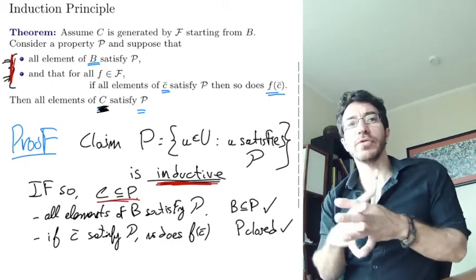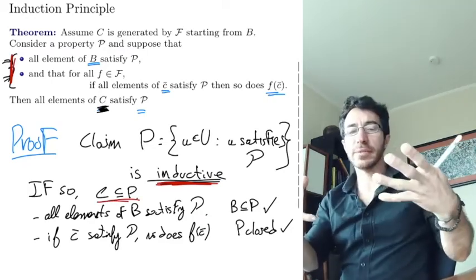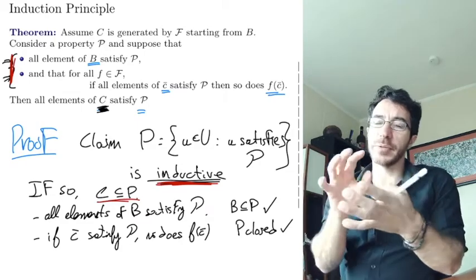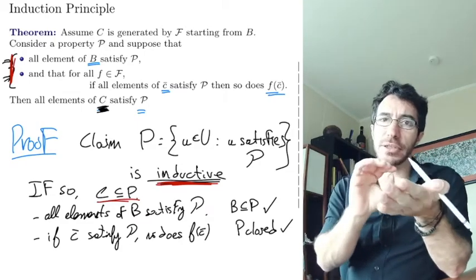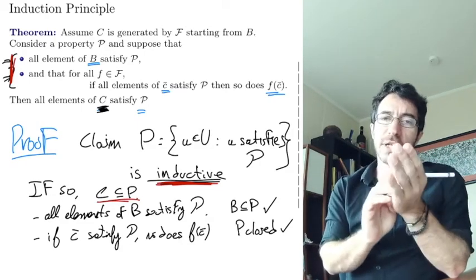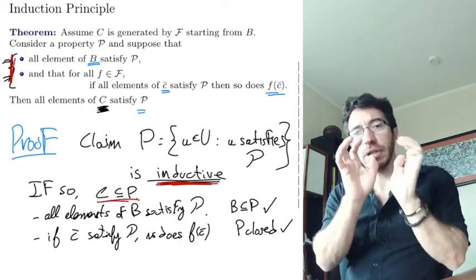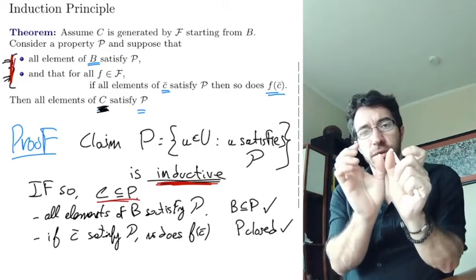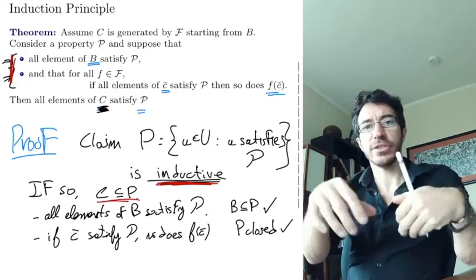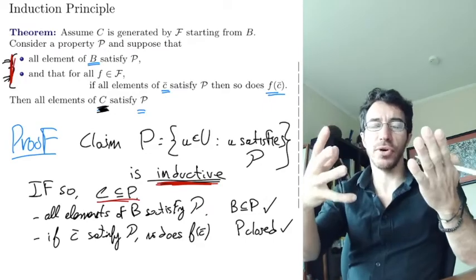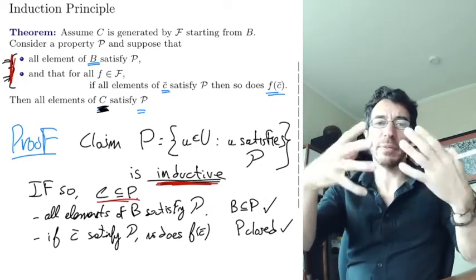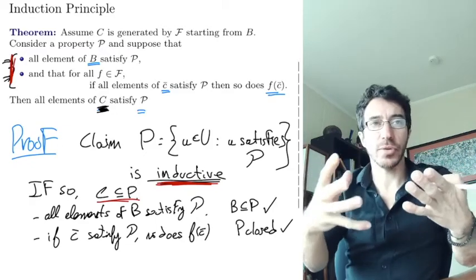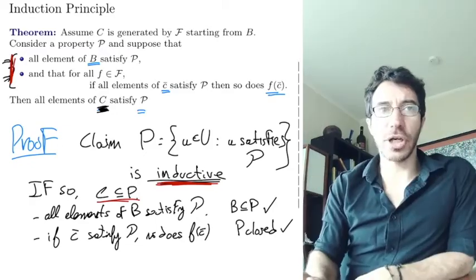So if you want to prove something about terms, all you have to do is first prove it about the variables, and then prove that whenever we know it's true for certain formulas, it's going to be true for whatever we get by applying the connectives to them.